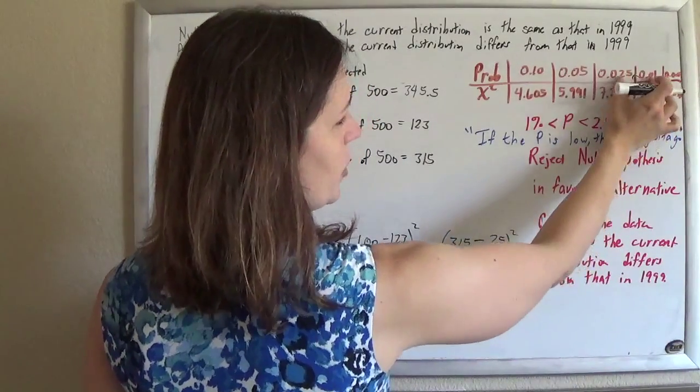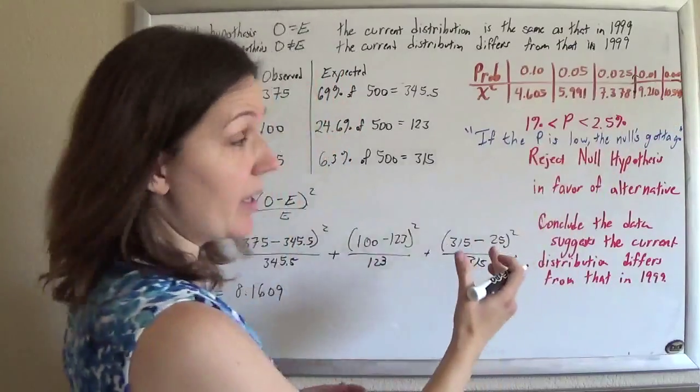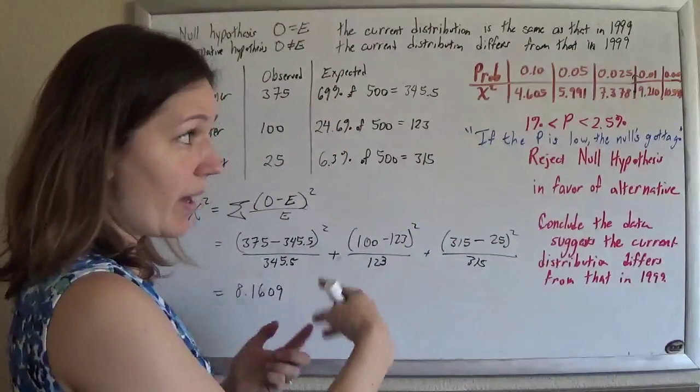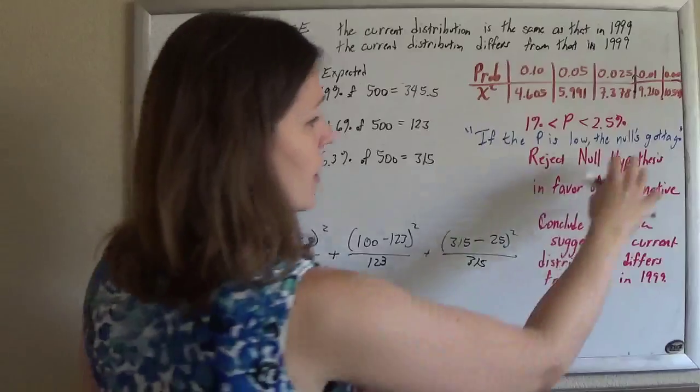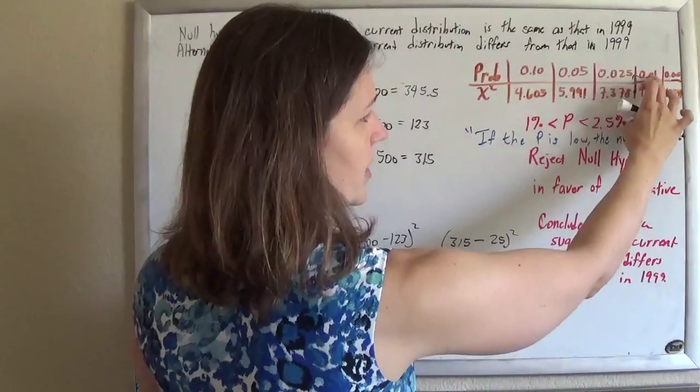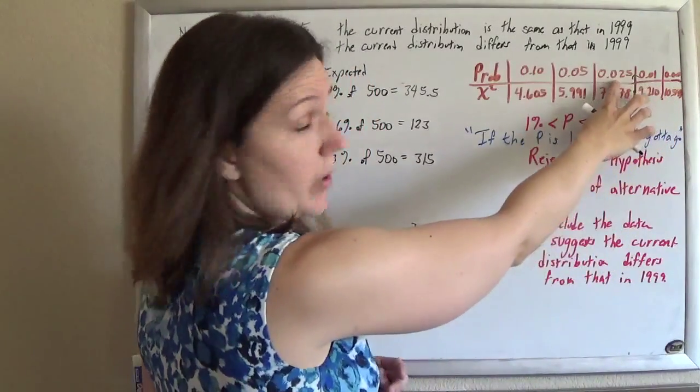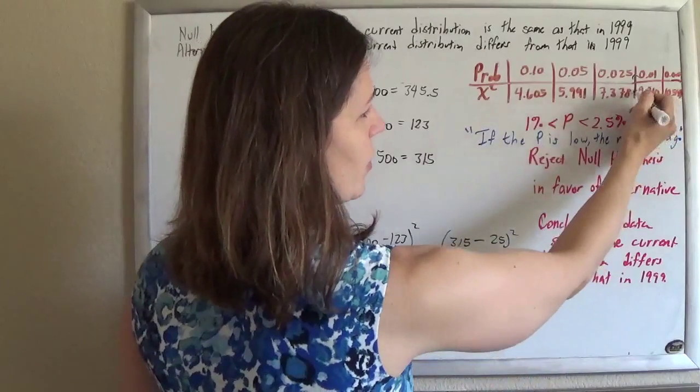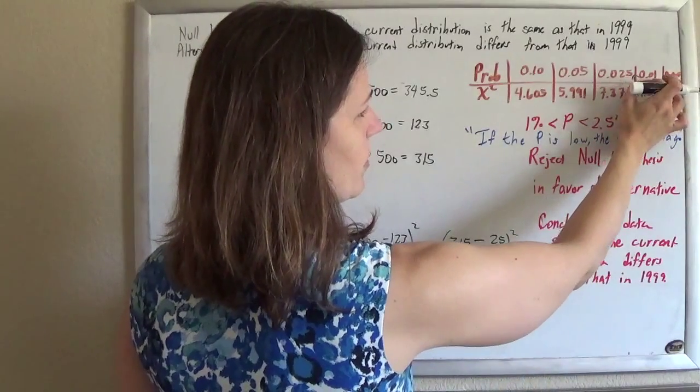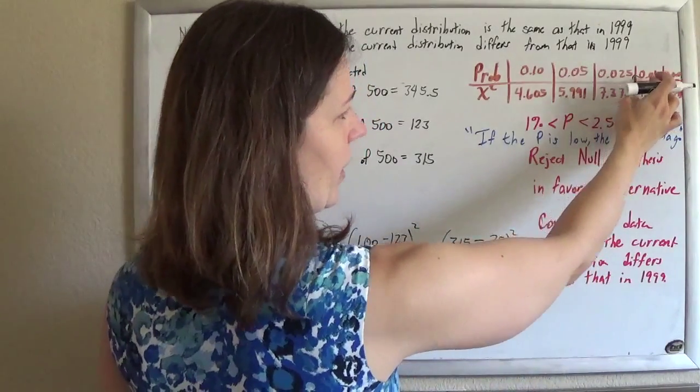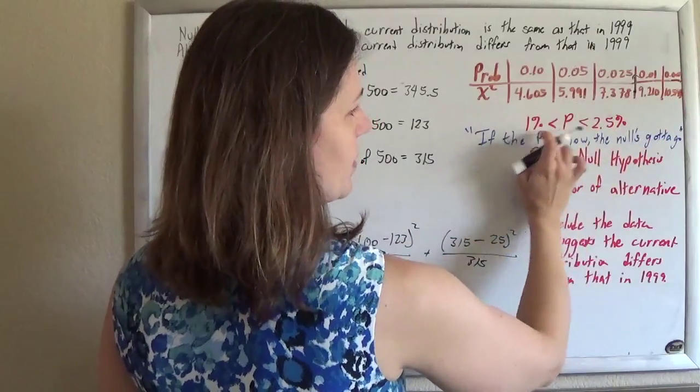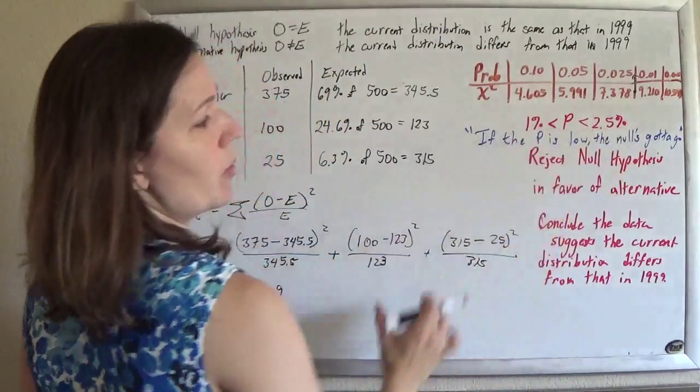Trace that on up to your p-value. So the probability of getting the result that we got based just on chance would be somewhere between this 1% here and that 2.5% there. So tracing that up between 0.025 and 0.01, the 1% is smaller than the 2.5%, so we'll put that there.